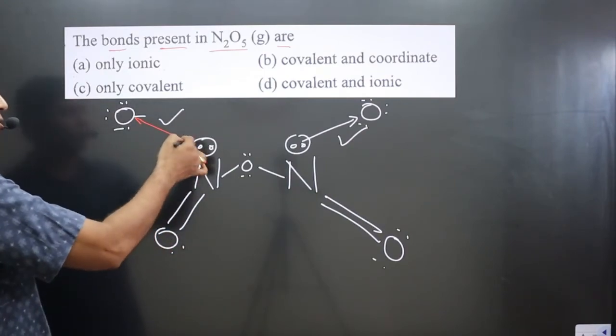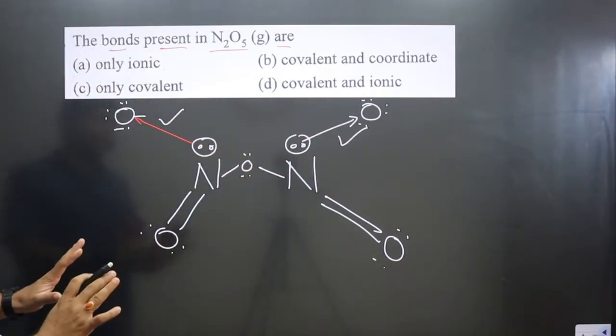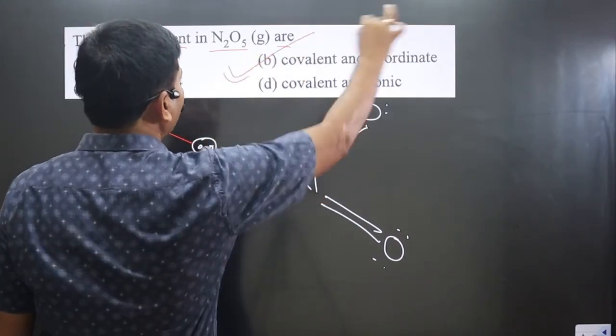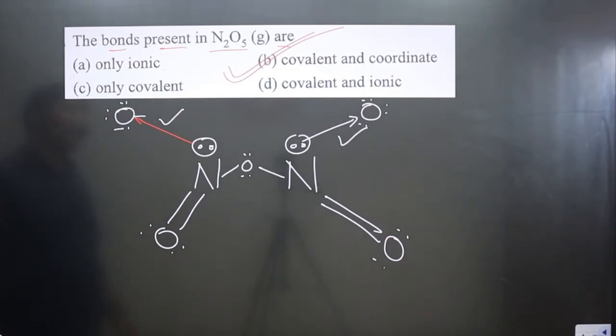So in this compound, both covalent as well as coordinate bonds are present. Option B is correct. If you like this video, please share and subscribe to the channel.